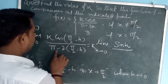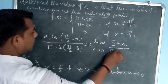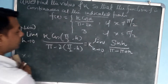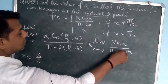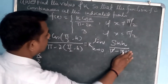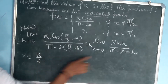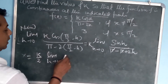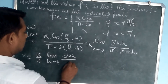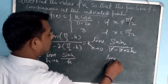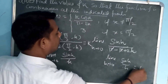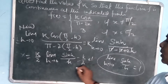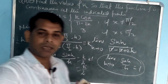In the denominator: π - 2(π/2 - h) = π - π + 2h = 2h. So we get k·sin(h) / 2h, which is k/2 · (sin h / h). Taking limit h tends to 0, by the definition of limit, sin(h)/h = 1. So LHL = k/2 · 1 = k/2.